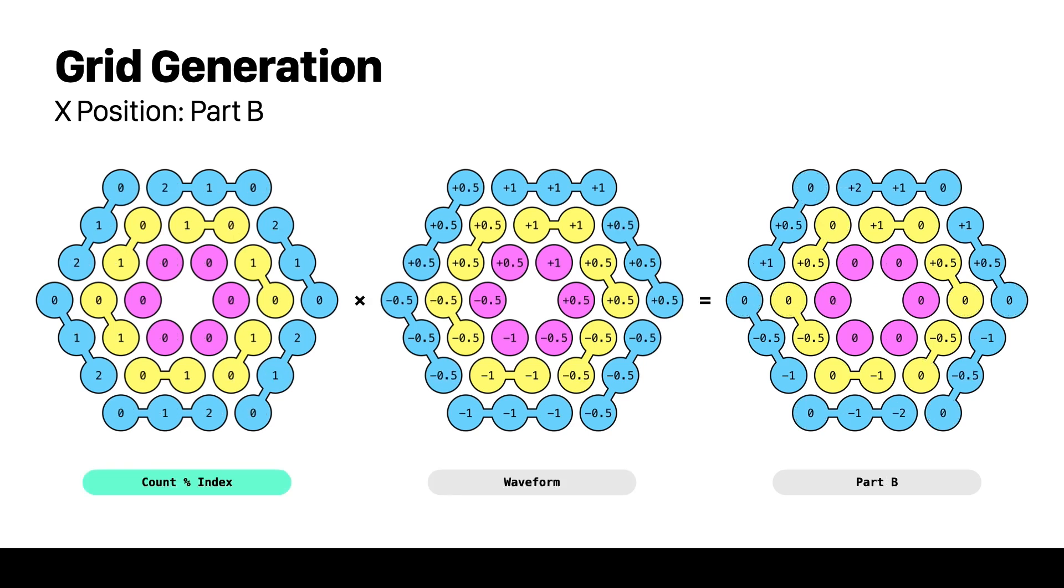That's easy to get by taking the division remainder of the ring count to ring index. For the parts of the sequence that we have half values we will need to use the waveform function as a multiplier. If we apply the waveform function we see that we take values of 0.5 and 1 which is exactly what we want.